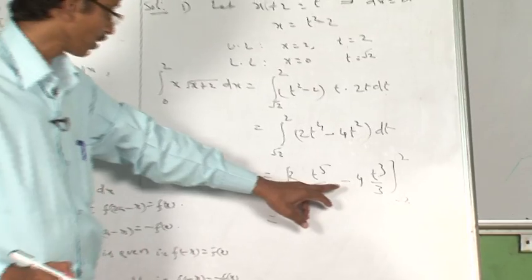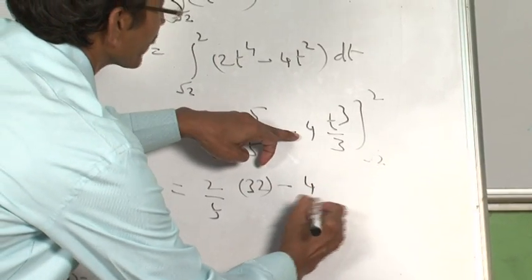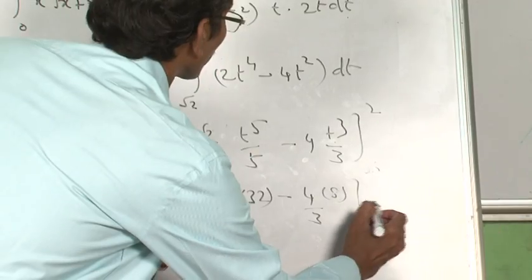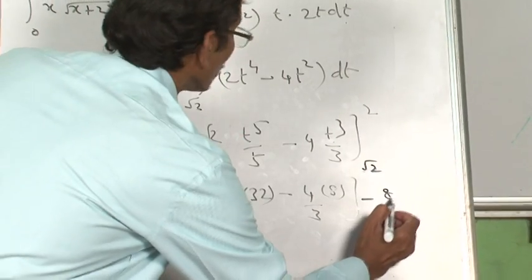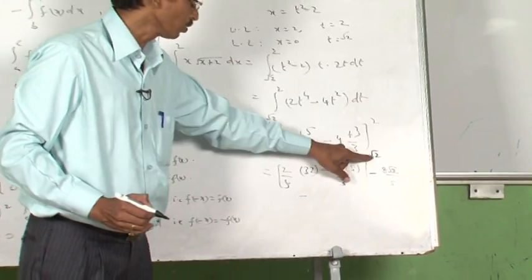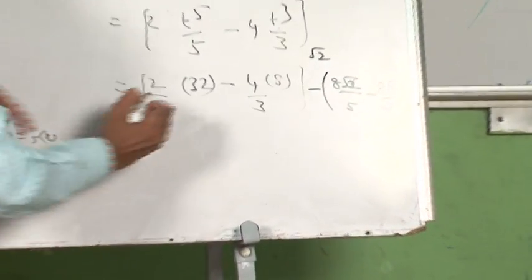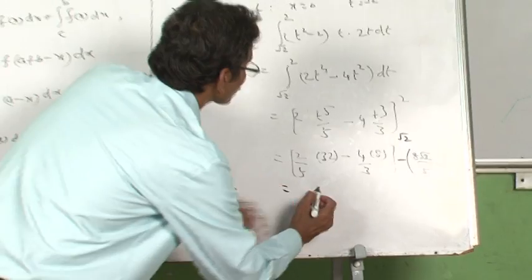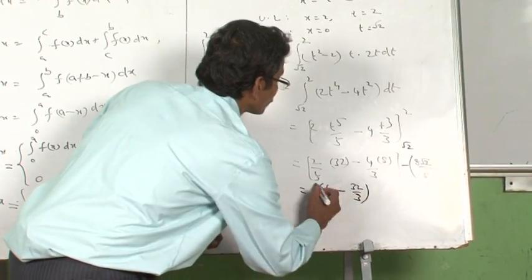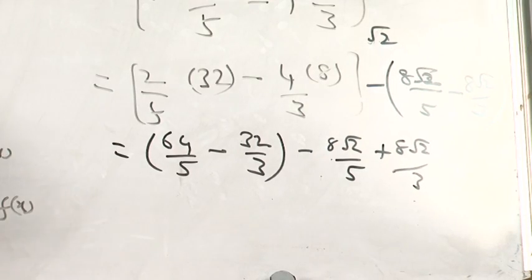Applying the formula F(b) − F(a): at t = 2, we get (2/5)(32) − (4/3)(8) = 64/5 − 32/3. At t = √2, we get (2/5)(4√2) − (4/3)(2√2) = 8√2/5 − 8√2/3. Subtracting and taking LCM of 15, the result is 32/15 + 16√2/15.